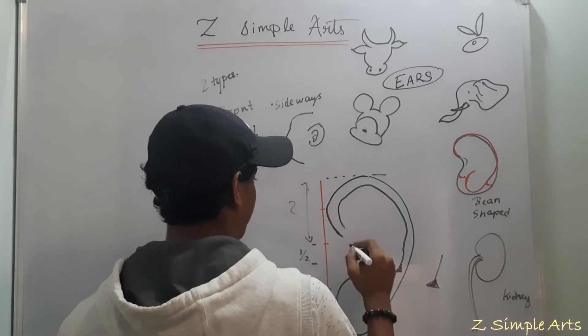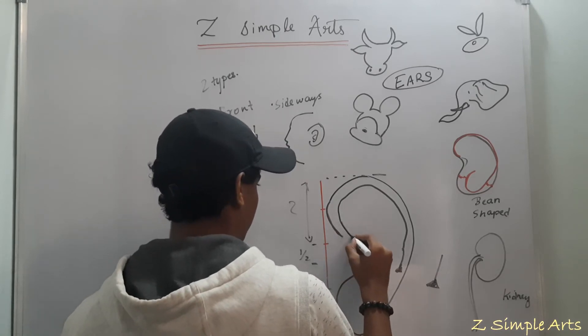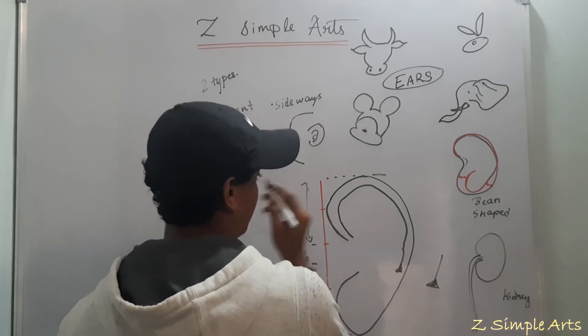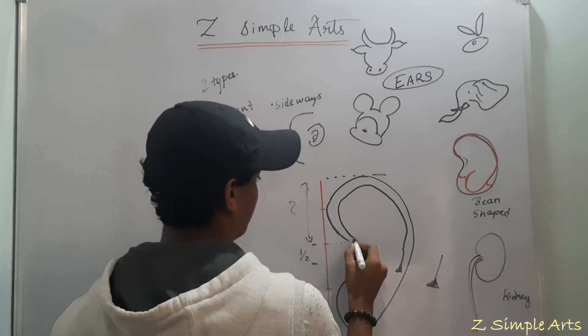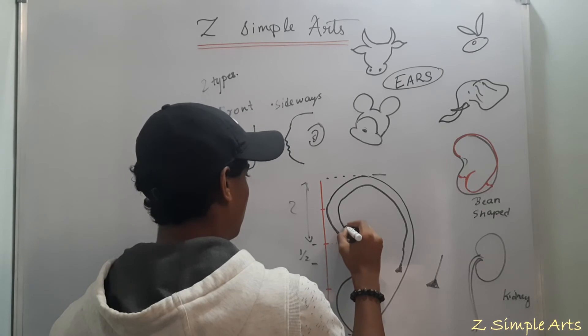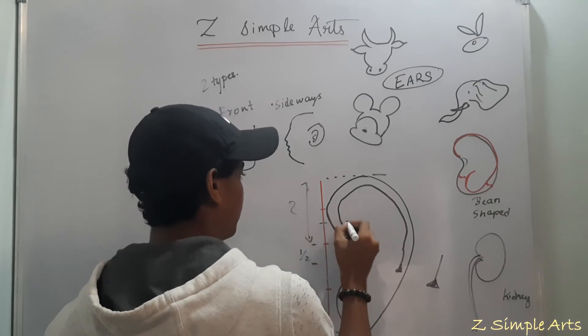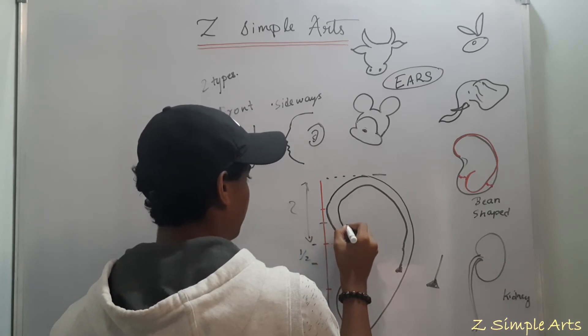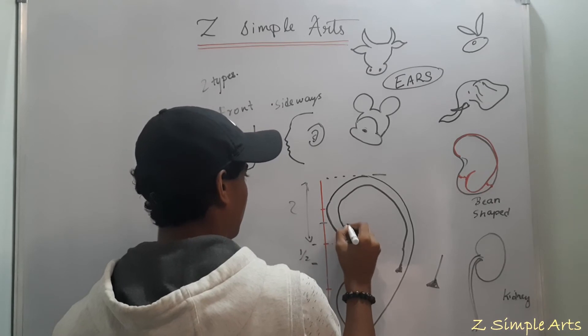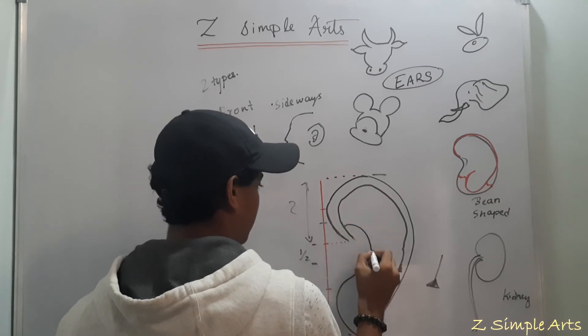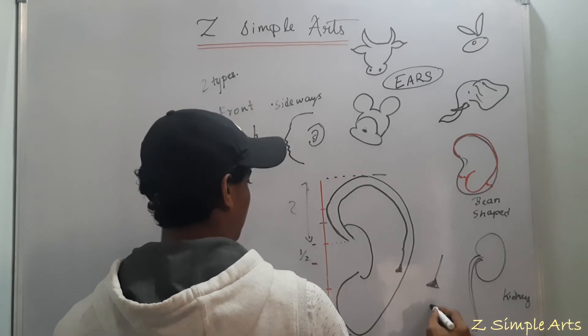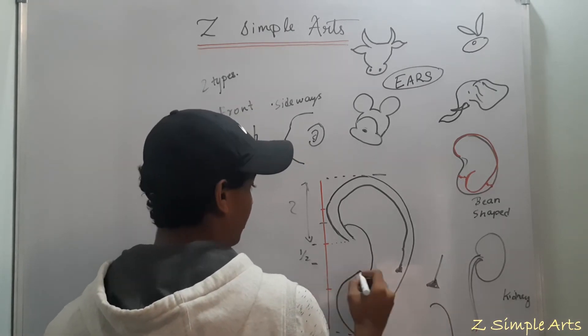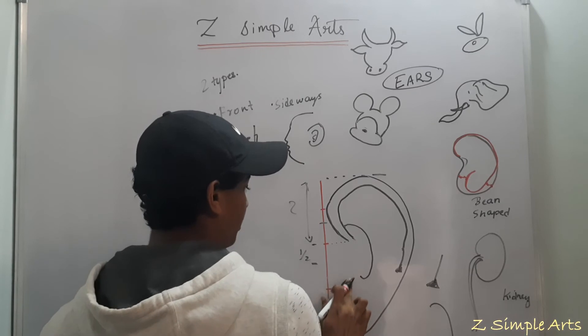So the next part is tricky. I have to further extend till the second part. Now mid of the first second part, take this line. Draw a C shape curve like this. And turn it a bit over here.